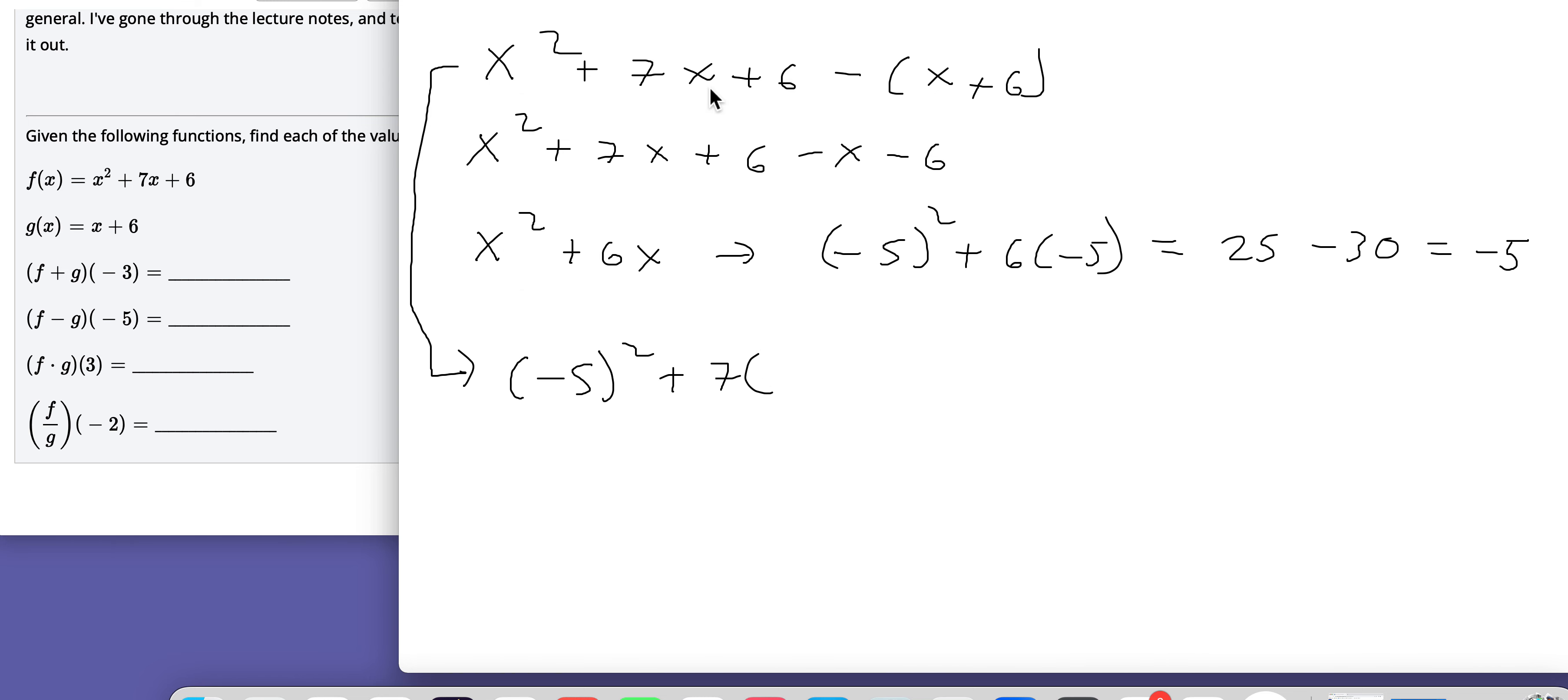7 times negative 5 right there, plus 6 minus negative 5 plus 6. And in terms of this function notation, what I'm doing here, this is the, so they're writing it this way, F minus G of negative 5.